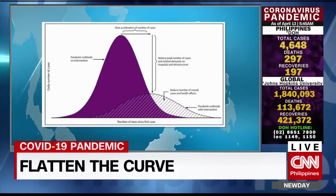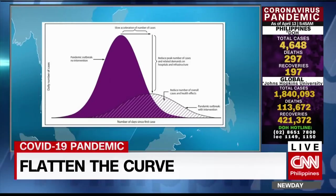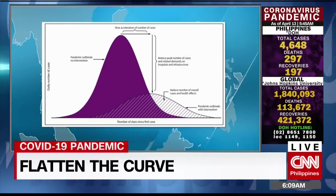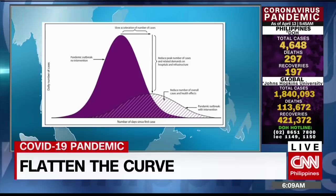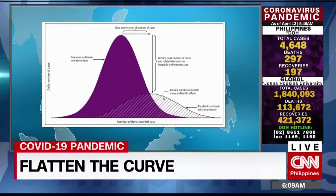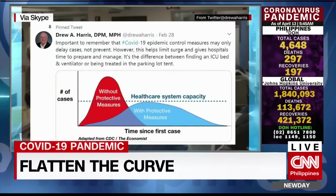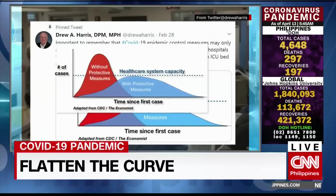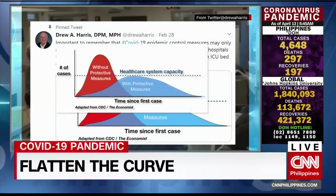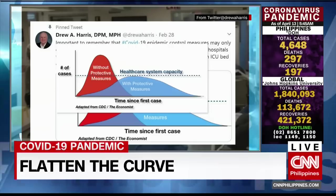Now that we have more information, experts are developing very specific models that input current knowledge of how this disease spreads, how quickly it can spread from one person to another and under what conditions. These make much more precise predictions as to how many cases you're going to see and when you're going to be seeing the peak. But all of that depends upon what the people do.